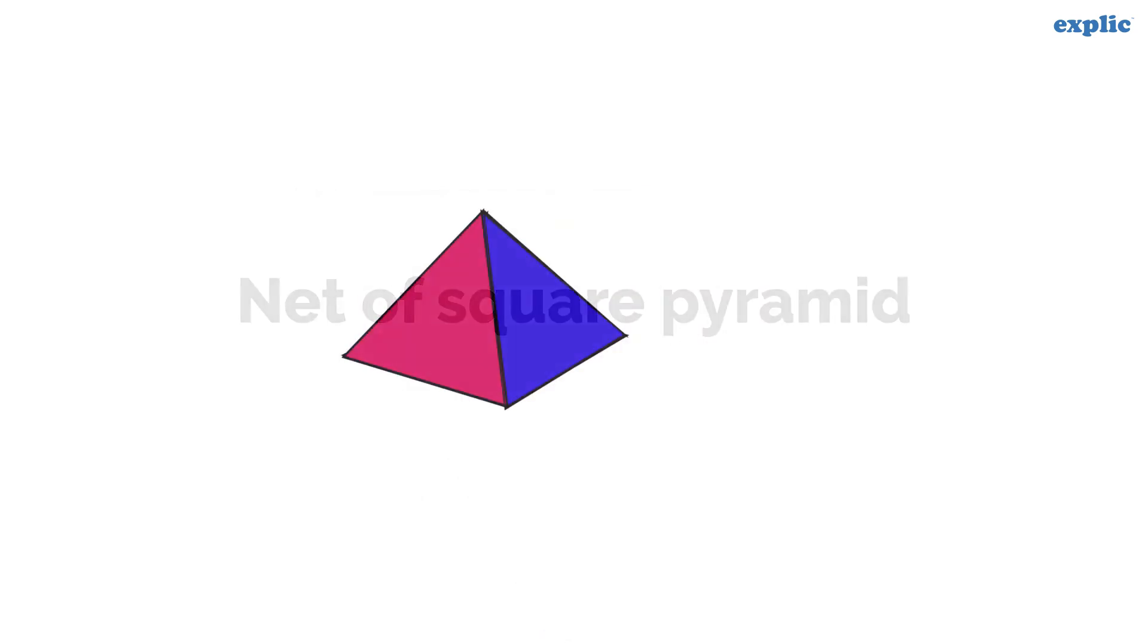Unlike a triangular pyramid, a square pyramid is made of one square and four equilateral triangles.